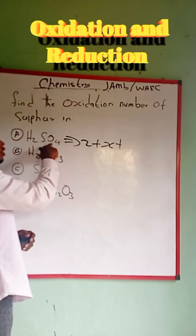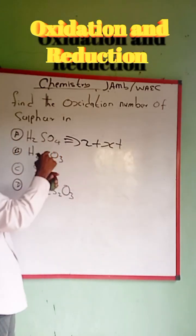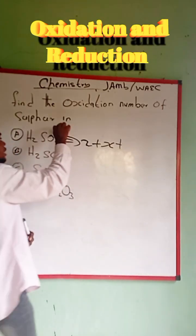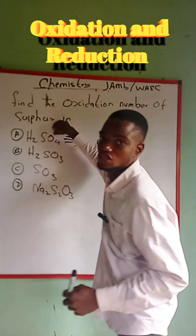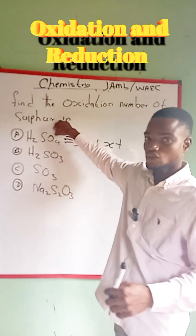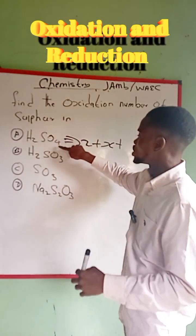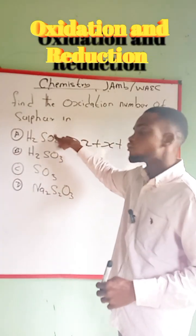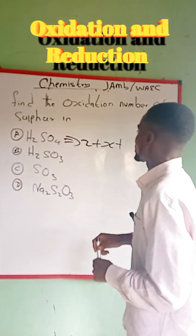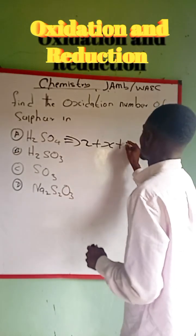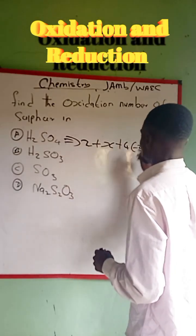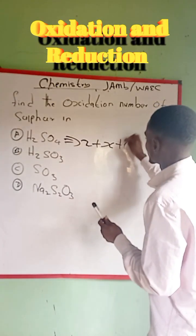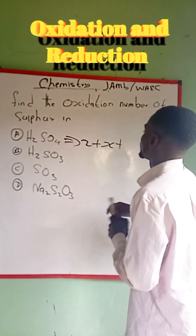We also add it to oxygen, which has four atoms, but the charge on oxygen is always negative two. So we multiply four by negative two, which gives us negative eight.